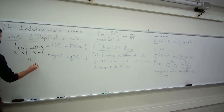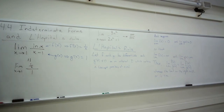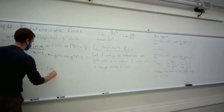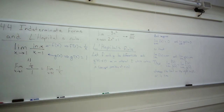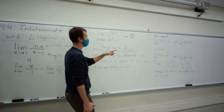And it says that this limit is in fact the same as the limit of f prime over g prime, which is 1 over x divided by 1. Rewriting this, the limit as x goes to 1 of 1 over x is just 1. So zero divided by zero in this case is 1. That's a direct application of L'Hôpital's rule in this indeterminate form of zero over zero.